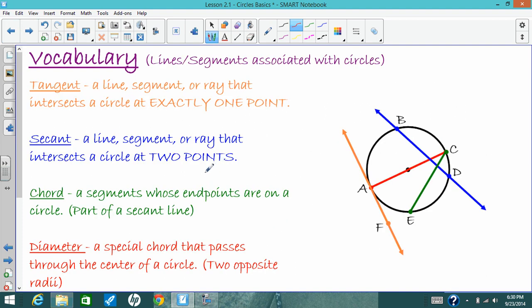There are four special lines and segments that we're going to talk about when dealing with circles, and you'll get really familiar with these lines and line segments. And the first one is a tangent line, and that's a line or a segment or a ray, and it's going to intersect a circle at one and only one point. So if you look at this orange line here, it touches the circle at point A, and then it goes off forever and never touches the circle again. So line AF is a tangent line.